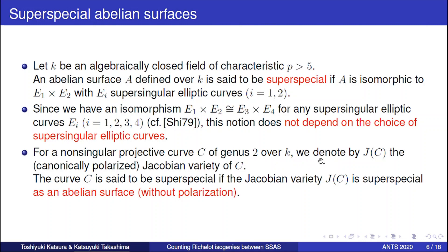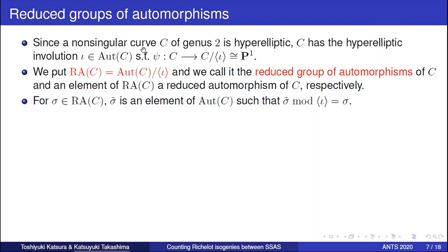For a non-singular projective genus-2 curve C, we denote by JC the canonically polarized Jacobian variety. The curve C is said to be super-special if the Jacobian is super-special as an abelian surface. So from this fact, all super-special abelian surfaces are isomorphic to each other without considering a polarization. So understanding the principal polarization is important in cryptography.